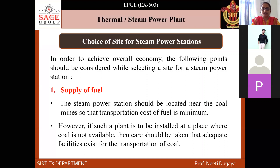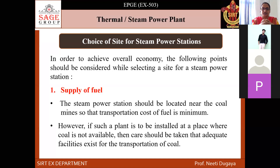Good morning all. In the last class we discussed the constituents of the steam power plant — all six parameters which are the main constituents of a typical thermal plant. We also covered the working of the thermal power plant, discussing all six fundamental blocks of the steam power plant in detail.